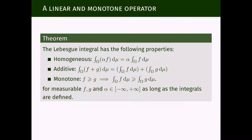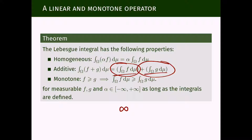The second property is: if a function f has an integral and the function g has an integral, and both are not infinite with opposite signs, then we can add these two extended numbers — except for the case where the first one gives plus infinity and the second one gives minus infinity, or vice versa. Except for these two cases, the addition of these numbers will coincide with what is the integral of f plus g.